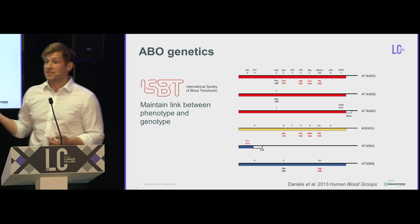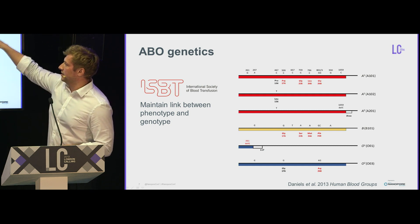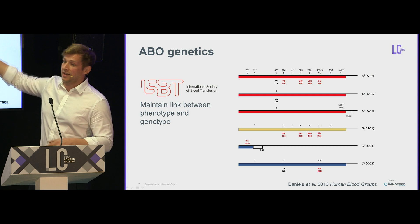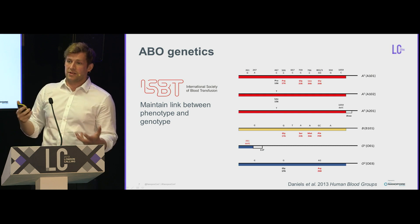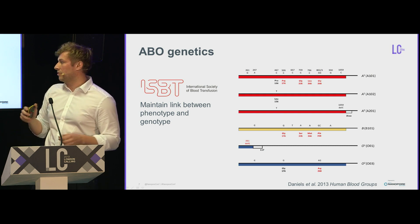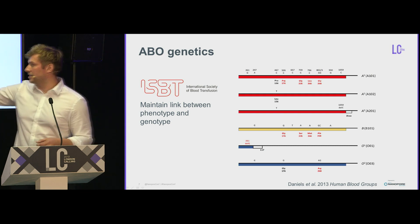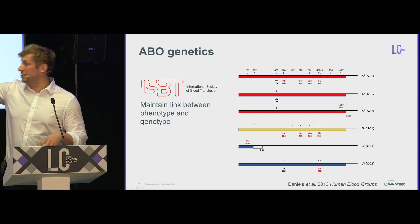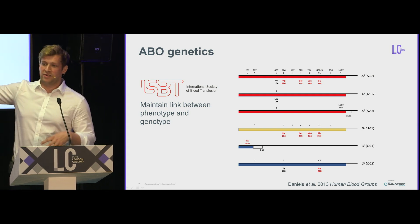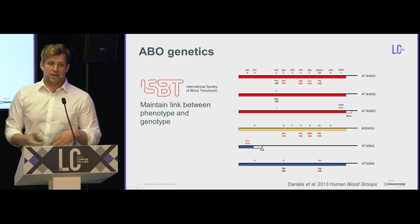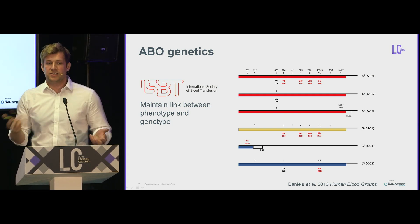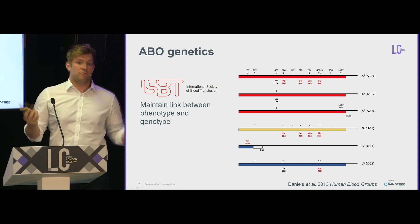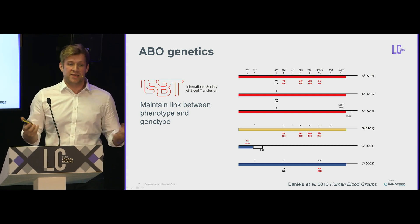In blood group B, those seven SNPs are different to A, and that's how you get the difference between the blood groups. Blood group O, most commonly in Europeans, is caused by a 261 delG — a deletion very early in the gene leading to truncation of the protein — so you just don't produce A or B antigens, and you're O.